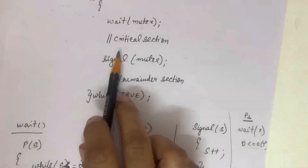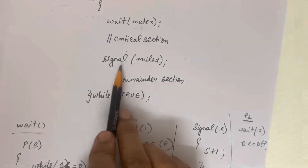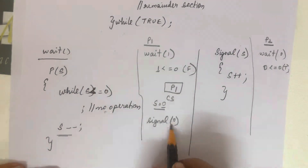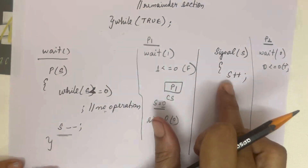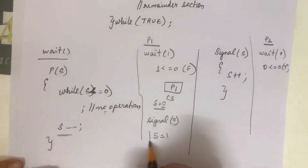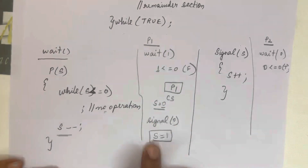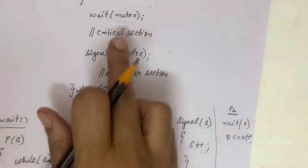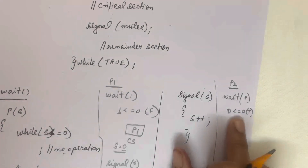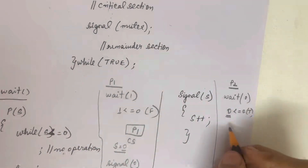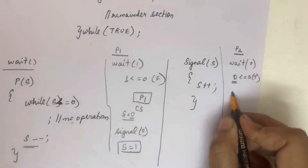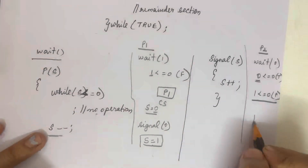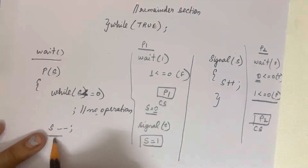After P1 finishes executing in the critical section, it calls signal(mutex). The signal function increments s from 0 to 1. Now s equals 1. P2, which was stuck in the while loop, now checks: is 1 less than or equal to 0? The condition is false, so it exits the while loop and enters the critical section.